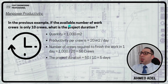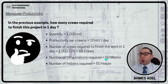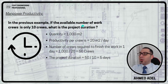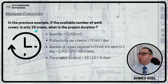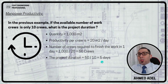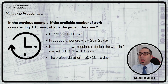Third part: if the available number of work crews is only 10 — not 50 — what is the project duration? I need 50 crews to finish in one day, but I only have 10. So the project duration equals 50 divided by 10, which is 5 days. All these examples show why productivity is important and how it can be used to estimate time, cost, and resources.